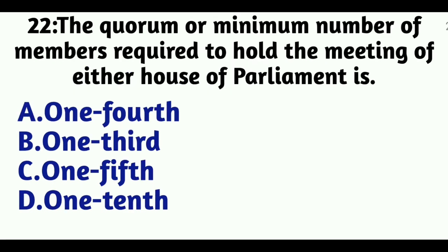Question 22: The quorum or minimum number of members required to hold the meeting of either House of Parliament is — Option A: One-fourth, Option B: One-third, Option C: One-fifth, Option D: One-tenth. The answer is Option D, One-tenth.